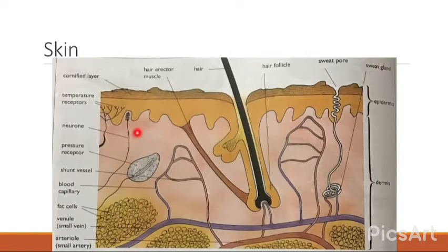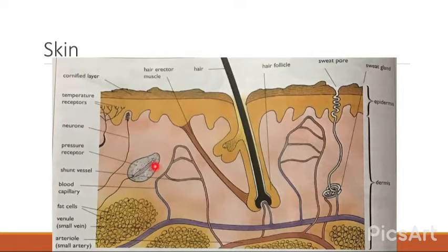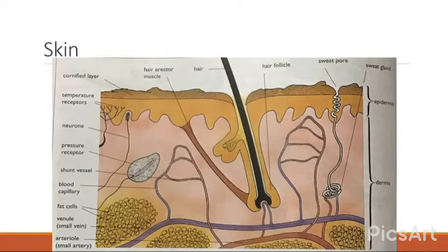Here is the diagram of the skin. The top part is the cornified layer, followed by the hair erector muscle, the hair, and the yellow part which is the hair follicle. The sweat pore is the gap at the top, and below it is the sweat gland. The upper region is called the epidermis; the entire lower region is the dermis. The diagram also shows the neuron, pressure receptor, shunt vessel, blood capillary, fat cells, venule, arteriole, and temperature receptors.